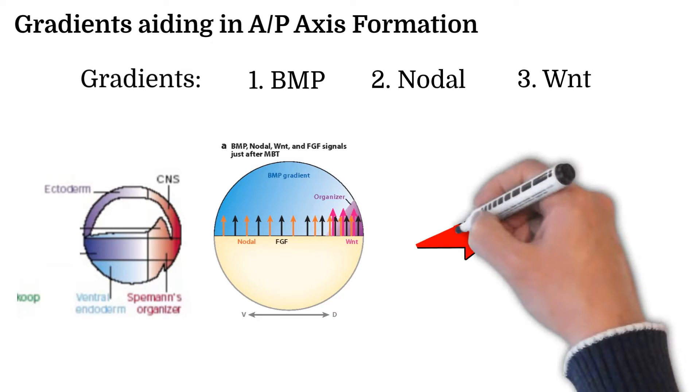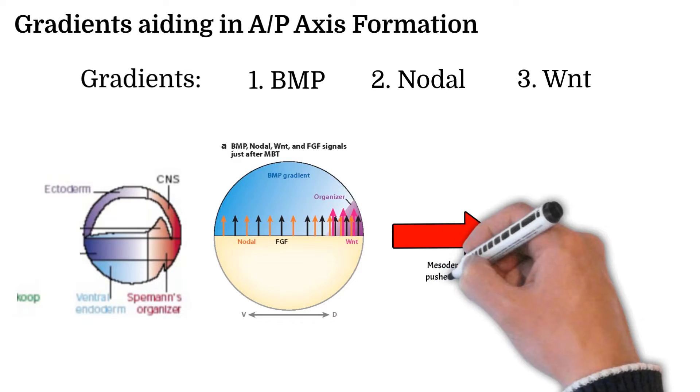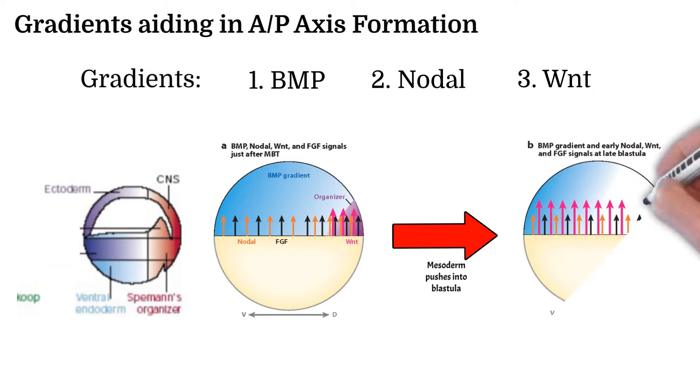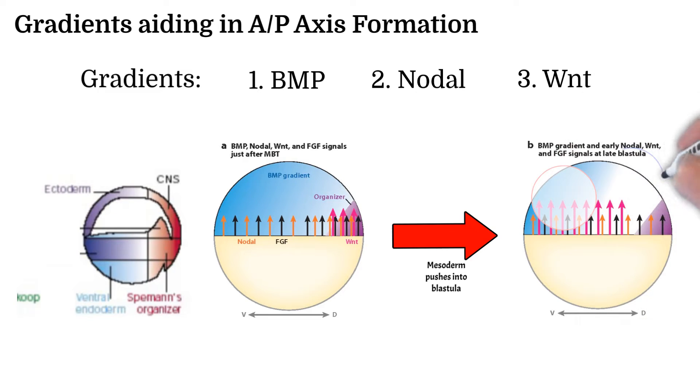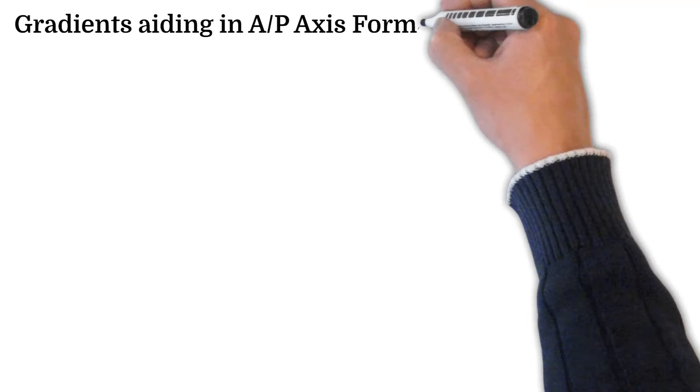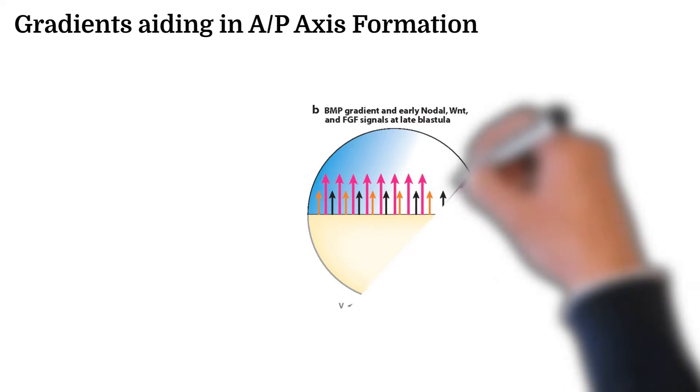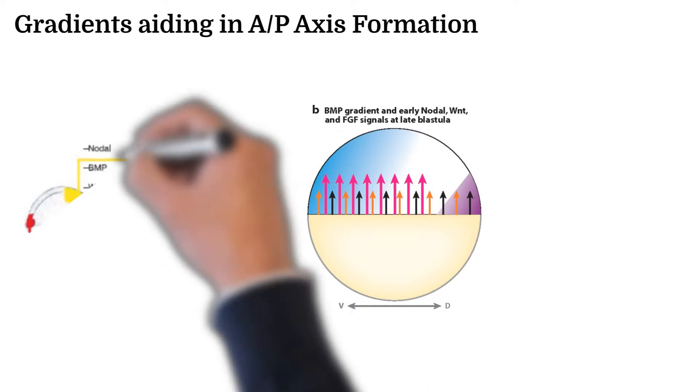As the mesoderm gets pulled underneath the ectoderm by the organizer, this gradient shifts, resulting in an area that has a high concentration of all three, an area with a low concentration of all three, and an area with only a high concentration of nodal. Each of these three areas will create very specific sections of the anterior posterior axis.